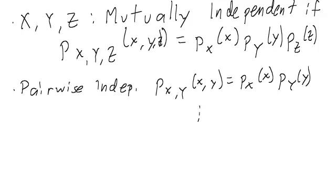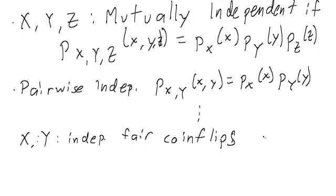So let's suppose that we have two random variables, x and y. And they both represent independent, fair coin flips. And we'll write the outcomes as 0 and 1. So tails corresponds to 0, heads corresponds to 1.